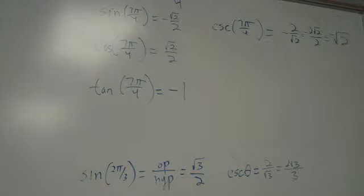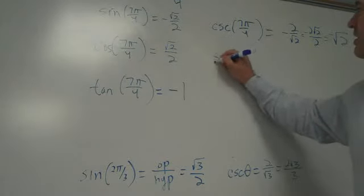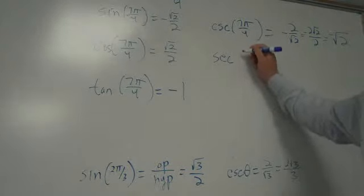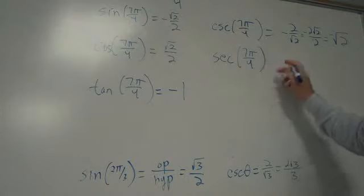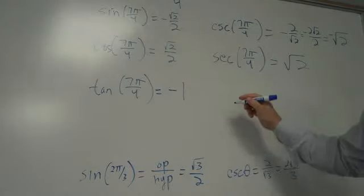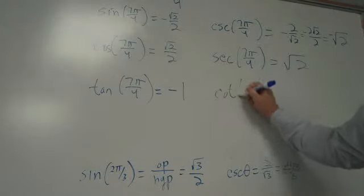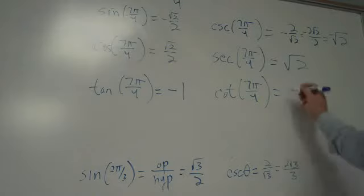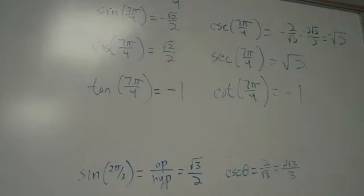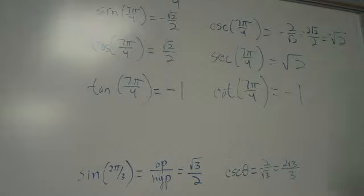It's supposed to be negative square root of 2. Secant of 7 pi over 4. It's going to be positive root 2, because this was positive. Yep. And cotangent, what is the reciprocal of negative 1? Negative 1. Saul's on a roll. Okay. So that's how you find these angles.